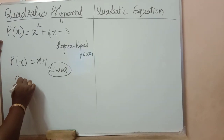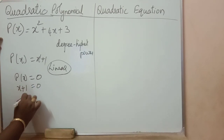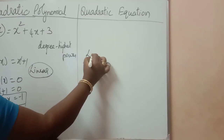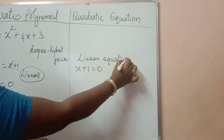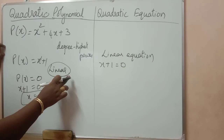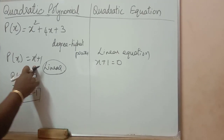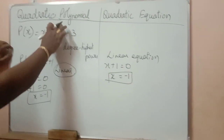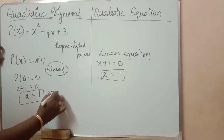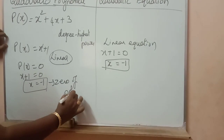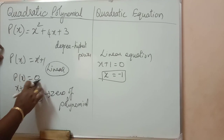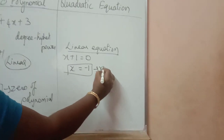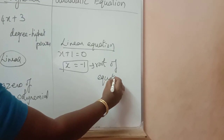If we equate this to 0, we get x plus 1 equal to 0, so x equal to minus 1. x plus 1 equal to 0 is a linear equation. P of x equal to x plus 1 is a linear polynomial because the degree is 1. From the polynomial, if we equate it to 0 and find the value of x, it is called the zero of the polynomial. From the equation, if we find the value of x, it is called the root of the equation.